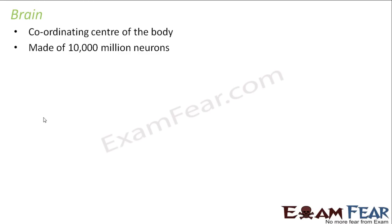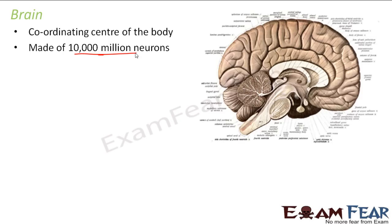When you go to appear for an exam, you read the questions and your brain thinks, searches for the answer, and then you write your paper. There is coordination between so many organs — your eyes see the question, your hands help in writing the answers — and this coordination is brought about by the brain. The brain is made up of around ten thousand million neurons, which are the basic building blocks of the nervous system.